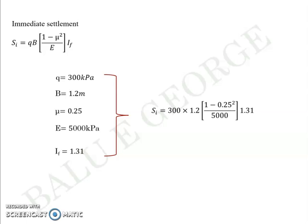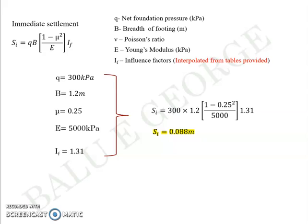Same thing: Q is given as 300, B is 1.2, the least among 1.2 and 2.4, mu is 0.25, Young's modulus is 5,000 kilopascals, influence factor IF is 1.31 from the table. Substituting all these values in the equation, you get Si, immediate settlement, as 0.088 meters.